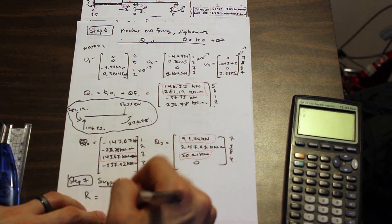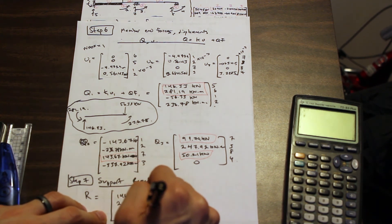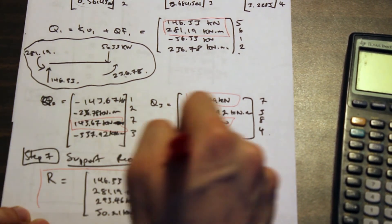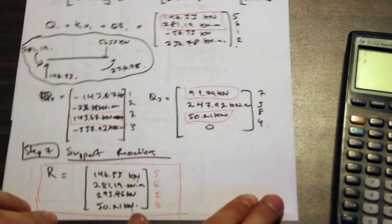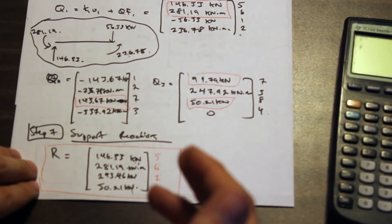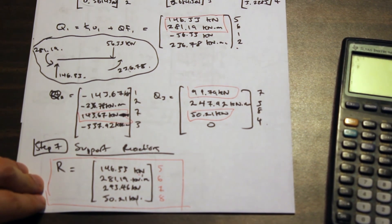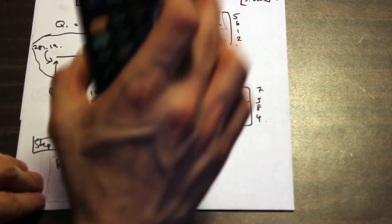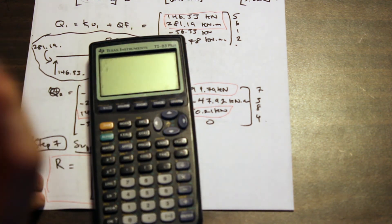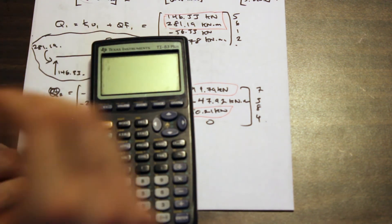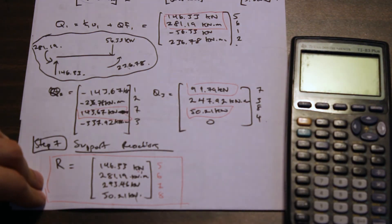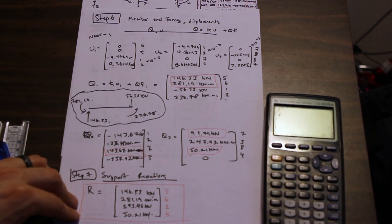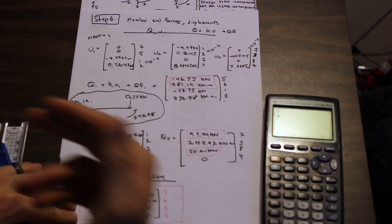Entry 8 is 50.21 kN, and that completes the problem. I know this was a long series of videos, but if you followed the steps and understand what's happening, you'll do fine on the test. Make sure to program your calculator and verify it works. Stay tuned for more matrix stiffness method problems on frames and trusses — like and subscribe if you enjoyed the video.